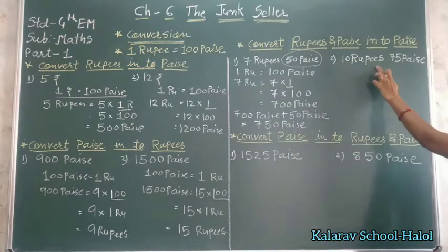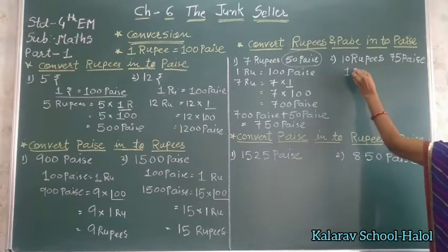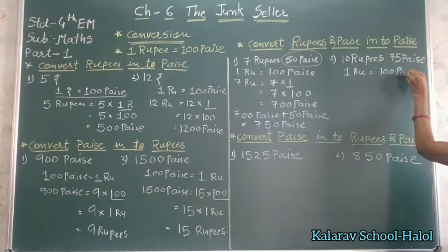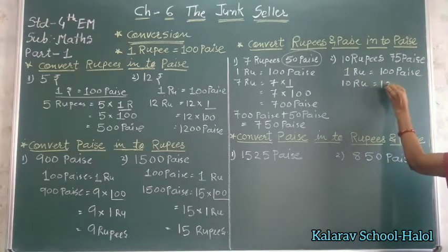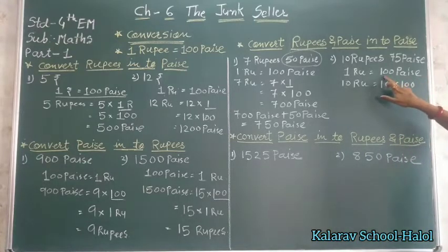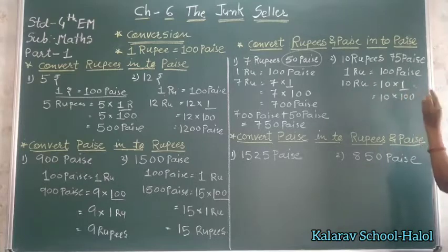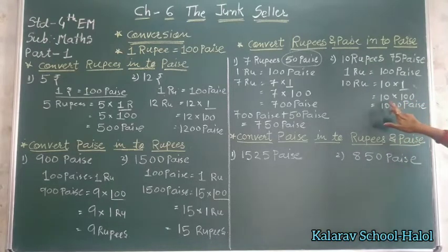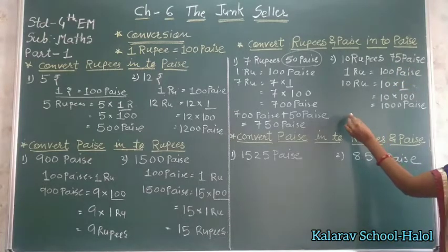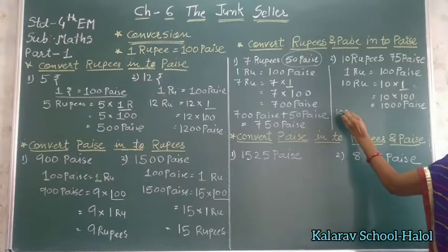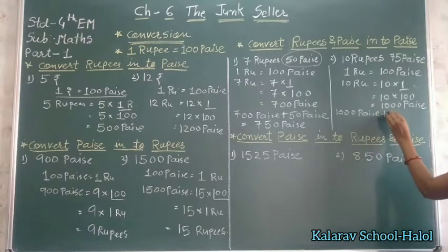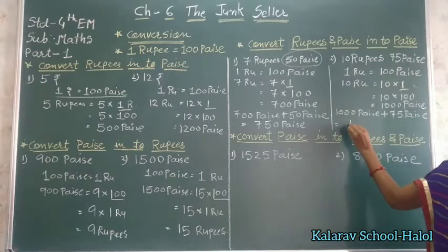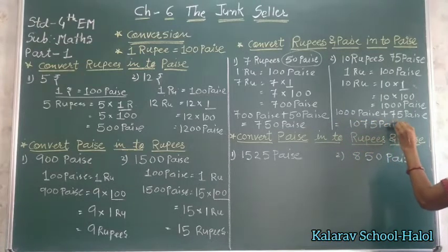Second number: 10 rupees and 75 paisa. First of all, 1 rupee is equal to 100 paisa. So 10 rupees is equal to 10 multiplied by 100, which equals 1000 paisa. Now 75 paisa is already given, so 1000 paisa plus 75 paisa is equal to 1075 paisa.